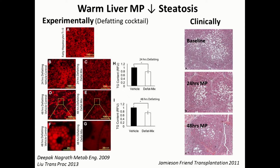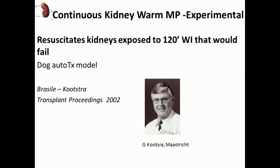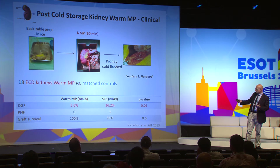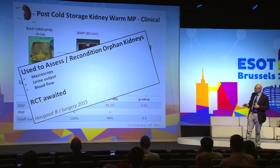Another advantage with the liver is that warm perfusion can reduce steatosis experimentally, and also has this potential clinically. The same holds true for the kidney: kidney warm perfusion has been an experimental reality, introduced by Kustra, who could preserve kidneys warm for up to 20 hours and showed that kidneys exposed to two hours of warm ischemia that would otherwise fail could be resuscitated by this technique. This has been translated into the clinic mostly as a post-cold-storage strategy by the teams of Nicholson and Hosgood, with good results using historical controls.